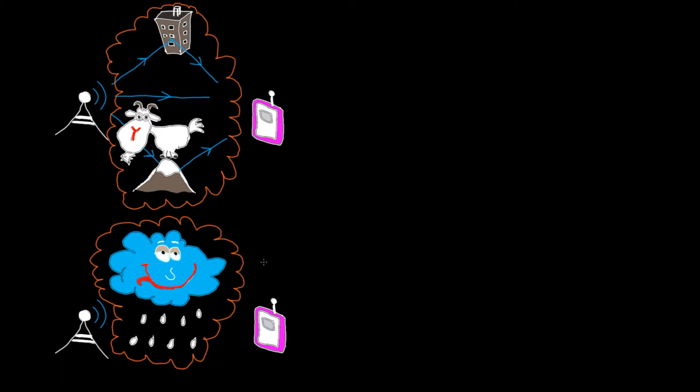These are two common examples of non-ideal communication channel with undesired response. To replace undesired with desired response we need to use equalization at the receiver. Let's see how it works.